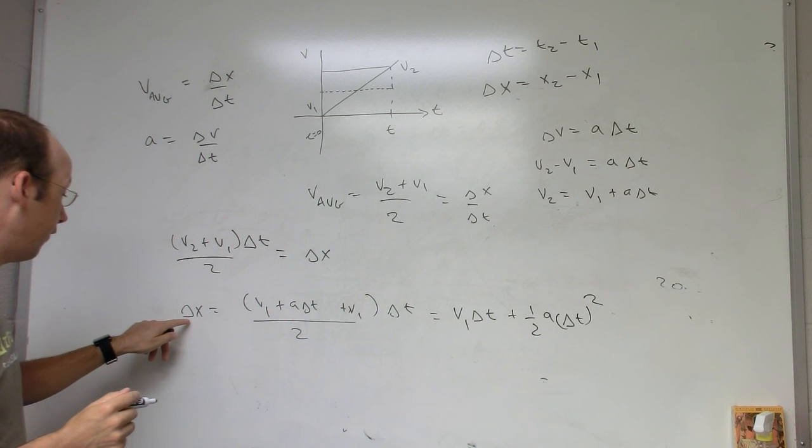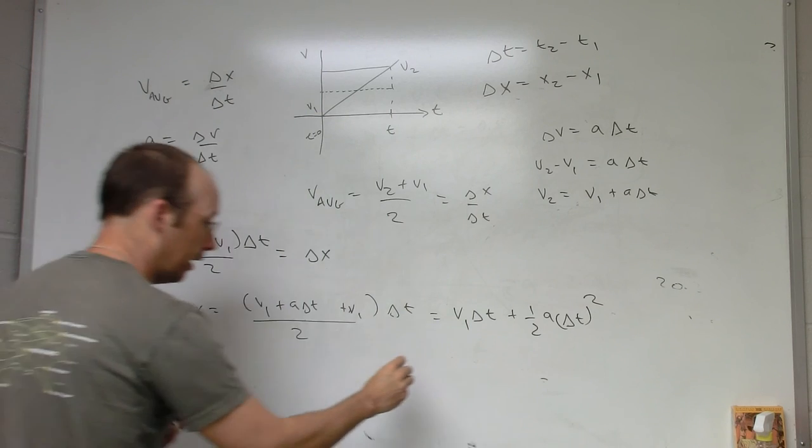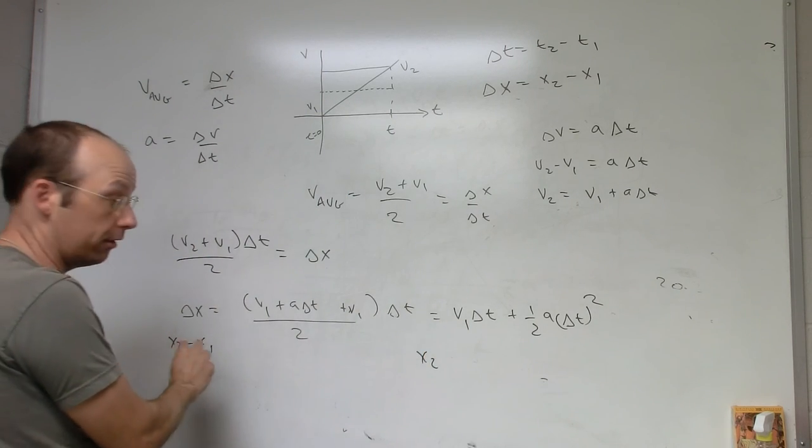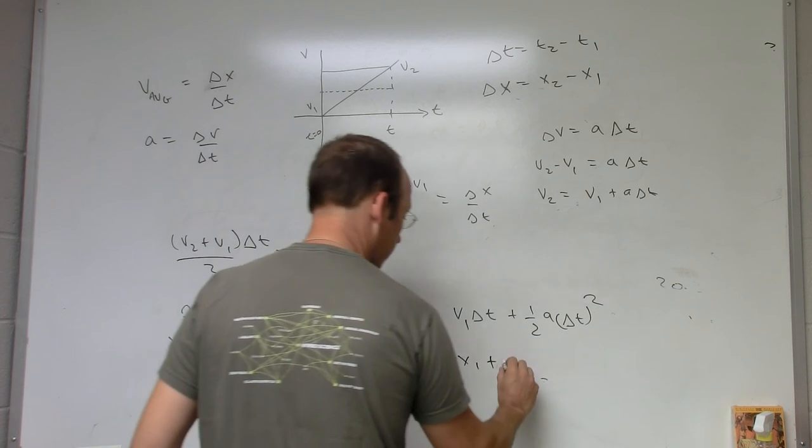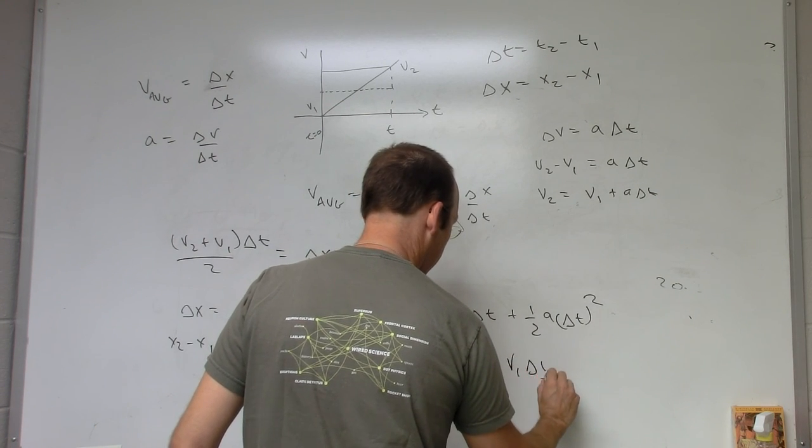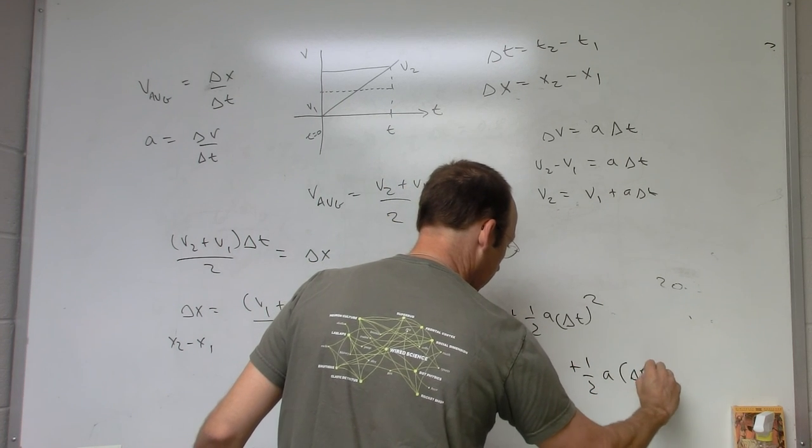This is an okay form, but now if I write delta x is x2 minus x1, and so for x2, I get x2, just add x1 to both sides. x2 equals x1 plus v1 delta t plus 1 half a delta t squared.